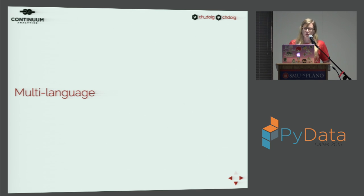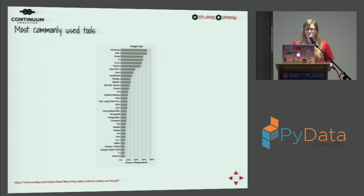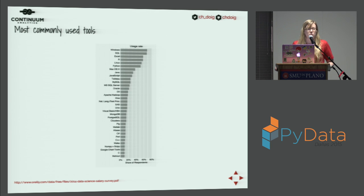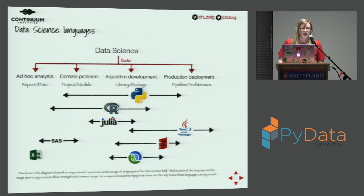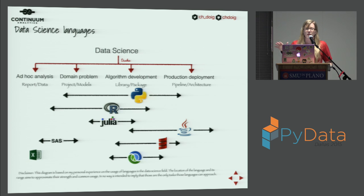Let's explore multi-language. This is a survey from O'Reilly — a data science salary survey asking people in the field what the most commonly used tools are. You see backgrounds ranging from developers to business people in data science, and you see Windows, SQL, Excel, Linux, Python, Mac OS, Java, JavaScript — a lot of languages and different tools. If we put those languages on top of the tasks we've seen, where do they fit?